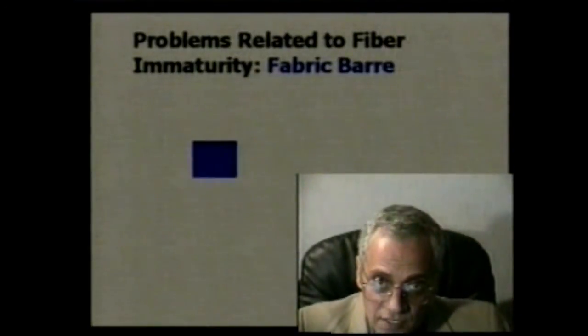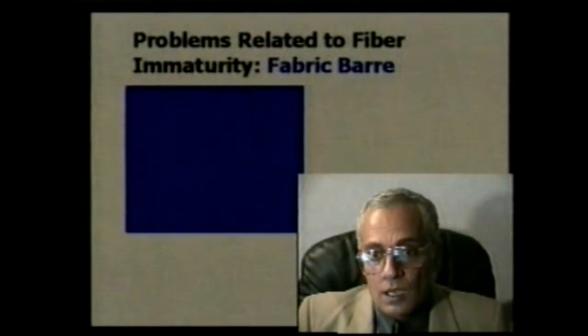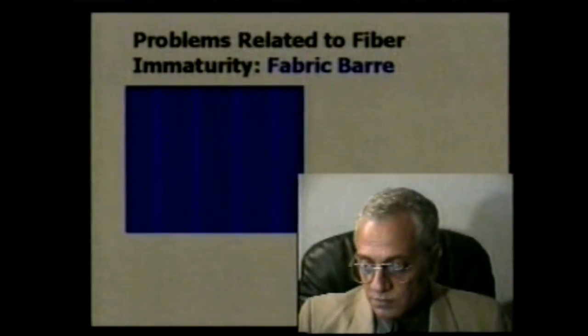Immature fibers mean low cellulose — that collapsed fiber doesn't have much cellulose in it. The cellulosic polymer has active hydroxyl groups that attract water and dye. If you have an immature fiber without enough cellulosic polymer, it does not absorb dye. You can easily see this in the fabric — white specks or spots that did not dye well are clusters of immature fibers with insufficient cellulose and insufficient dye absorption.